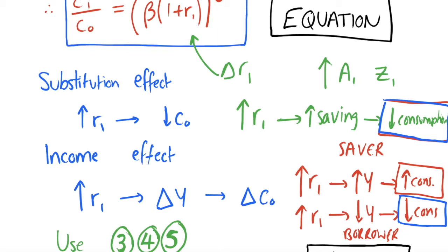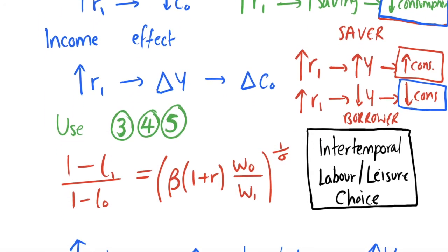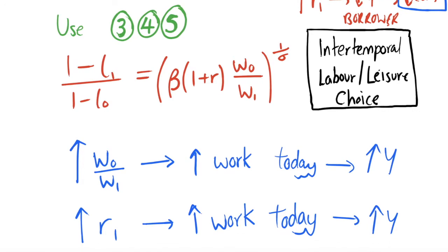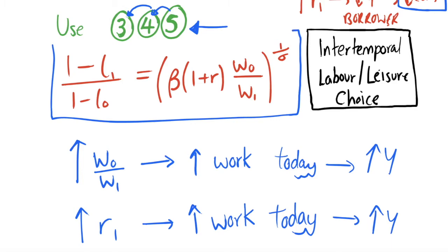A change in productivity can have a knock-on effect on saving and consumption choices, which can further affect income — I'll return to this after deriving a second equation. Going back to our first-order conditions, this time using equations three, four, and five, where equation five again gives lambda zero equals lambda one times the interest rate, we substitute and obtain an intertemporal labor and leisure condition. Rather than relating consumption in periods zero and one, this equation gives the relationship at the optimum between the amount of labor supplied in each period.